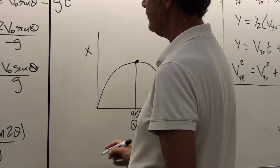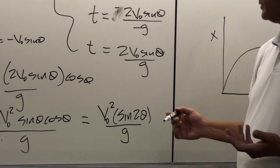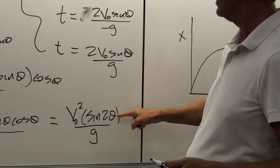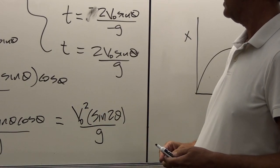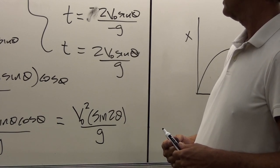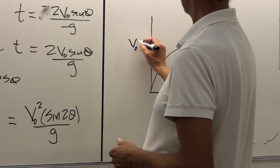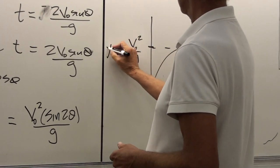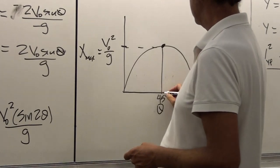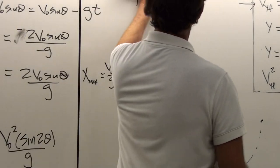If the initial velocity is constant and doesn't depend on angle — assuming the initial speed stays the same regardless of the projection angle — then the maximum value for the horizontal range would be v₀² over g. That would be x max, occurring at this peak point, which according to our graph is 45 degrees. But let's verify mathematically that this is in fact the case.